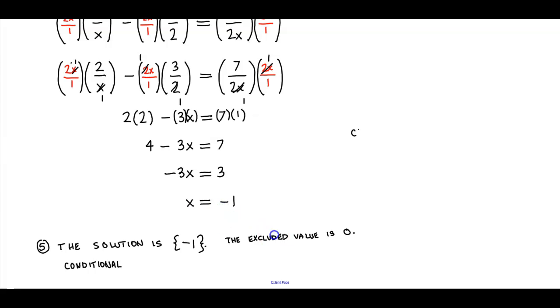Now, if we wanted to check by setting x to be negative 1, we have 2 over negative 1 minus 3 over 2, which is equal to 7 over 2 times negative 1.